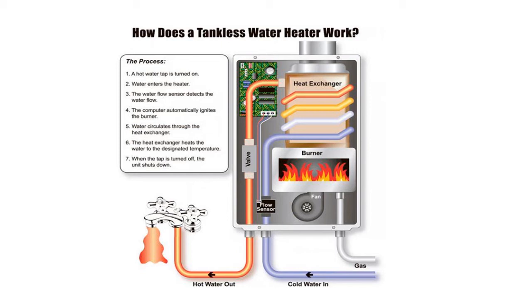To overcome this problem, you can install two or more tankless water heaters connected in parallel for simultaneous demands of hot water. You can also install separate tankless water heaters for appliances such as a clothes washer or dishwasher that use a lot of hot water in your home.